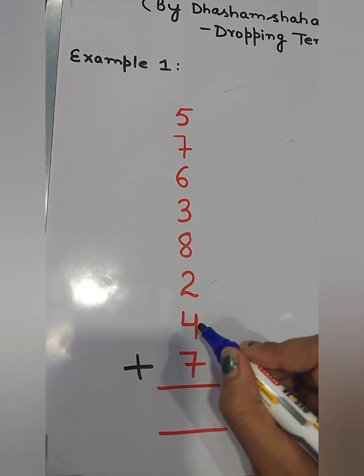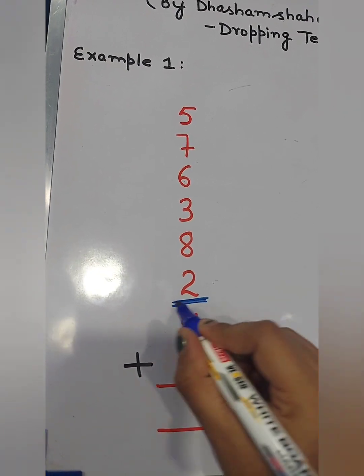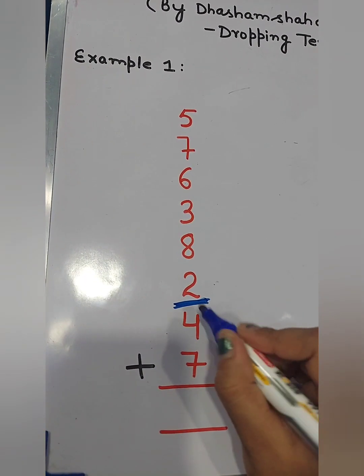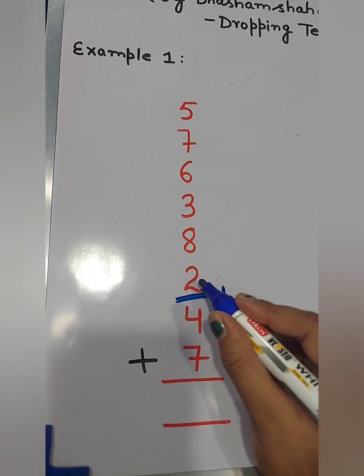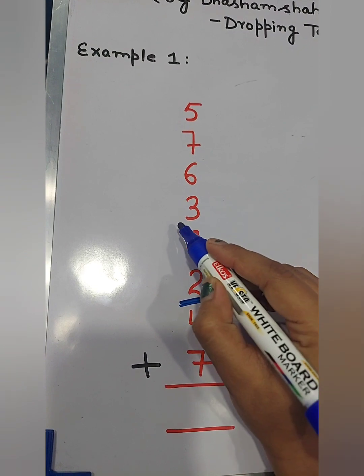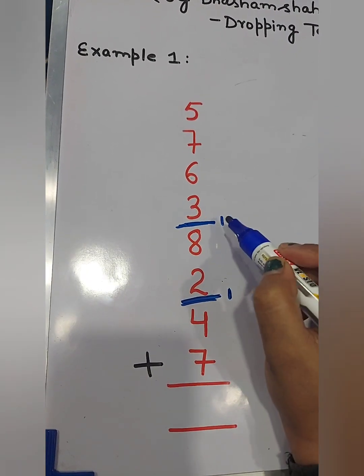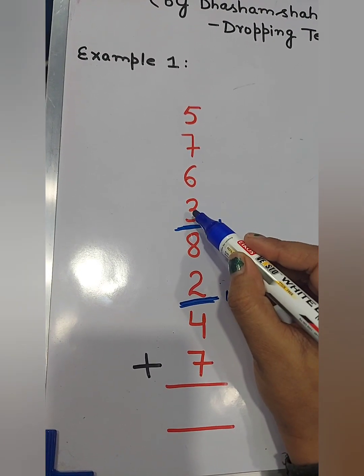7 plus 4, 11. 11 जो है वो 10 से बड़ा है, तो हमने यहाँ पे 10 को छोड़ दिया. 10 को drop किया, 1 बच गया. And 1 plus 2, 3. 3 plus 8, 11. 11 में से अगें 10 को drop कर दो. We get 1. So 1 carry plus next number 3. 1 plus 3, 4.